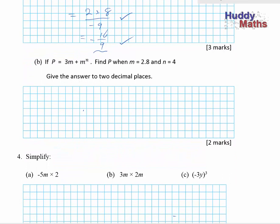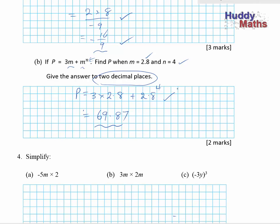Let's have a look at this one. We're replacing M by 2.8 and N by 4. P is 3 times 2.8, plus 2.8 raised to the 4 — you'll need a calculator for this one. The answer is 69.87, because you had to have 2 decimal places. There's 1 mark for the careful replacement of each letter by its number and 1 mark for 2 decimal places. It must have the right number of decimal places because it says so in the problem — read the question carefully.